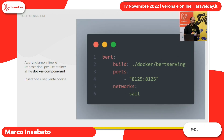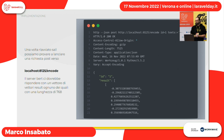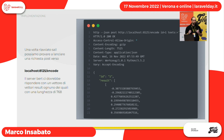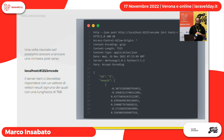Aggiungiamo al docker-compose la build che si trova all'interno di bert-serving, la porta e il network. Una volta fatto questo possiamo già provare a fare una semplice richiesta HTTP POST. Dovete mandare due semplici dati necessari che sono l'ID e il testo da convertire, e vi ritornerà un oggetto con il risultato della trasformazione in vettore.